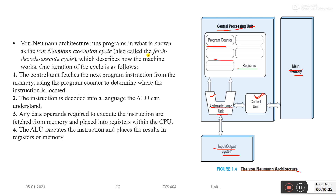The Von Neumann execution cycle works as a fetch-decode-execute cycle. Fetch means the instruction is fetched from memory into the CPU. The instruction is then decoded to determine what operation to perform with the ALU, and then executed. Fetching happens between the CPU and the memory location, while decoding and execution happen within the CPU block.